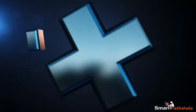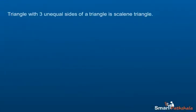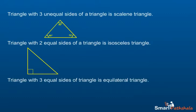Understanding of Elementary Shapes: Classification of Triangles. This module will describe the basics of 2D shapes and views. A triangle having all three unequal sides is known as a scalene triangle. A triangle having two equal sides is known as an isosceles triangle. A triangle having three equal sides is known as an equilateral triangle.